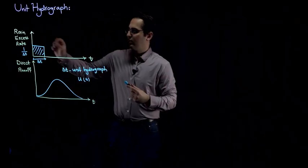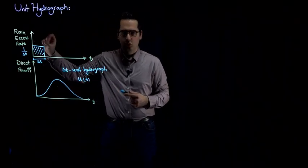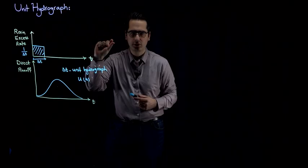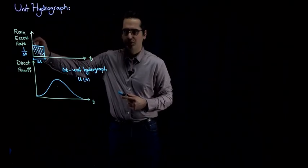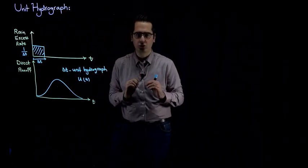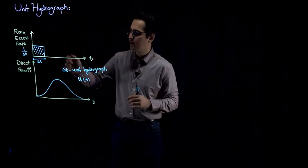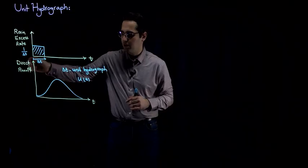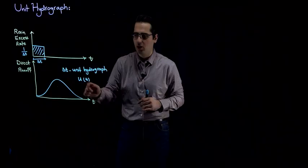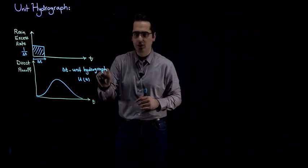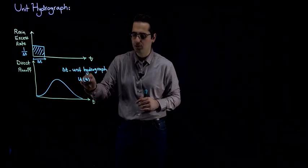All right. So again, I repeat. As a result of one inch or one centimeter, one unit of rainfall excess, which is uniformly distributed over the watershed, will have a direct runoff hydrograph like this that we call it a delta T unit hydrograph. And we show it by U(T).